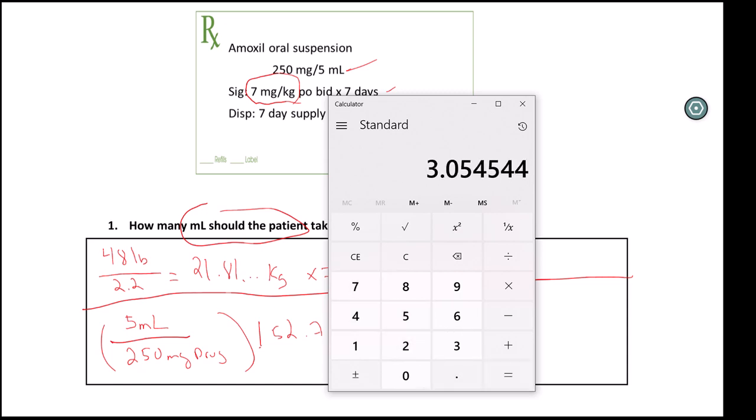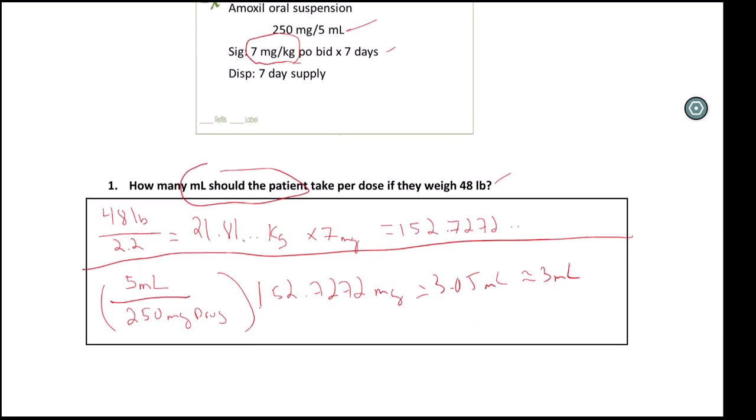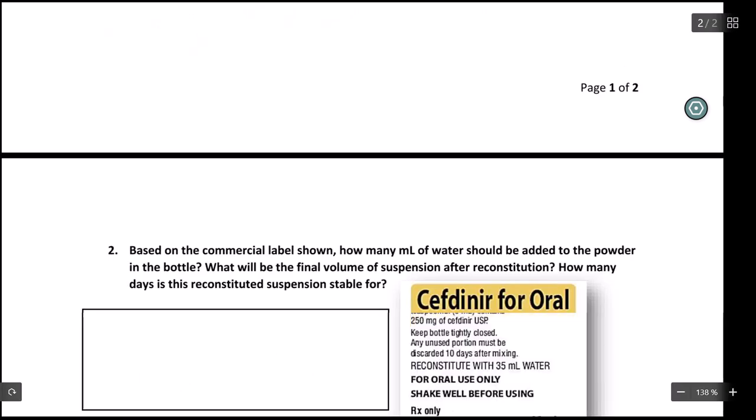3.05 mLs, which we are going to assume for ease that it's about 3 mLs is what we can probably measure out in realistic terms. So the dose that the person is going to take is 3 mLs. It's going to be by mouth twice a day for seven days. Now the question is, we have to dispense a seven-day supply, and we'll do that in a following example.